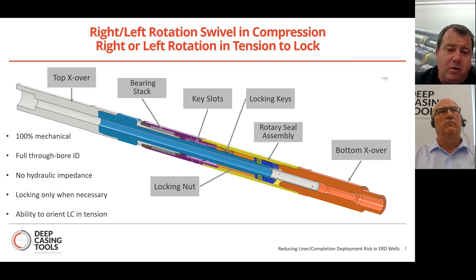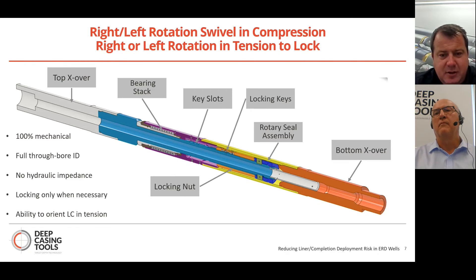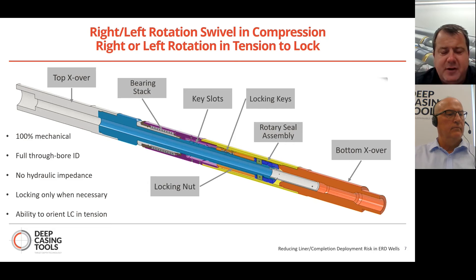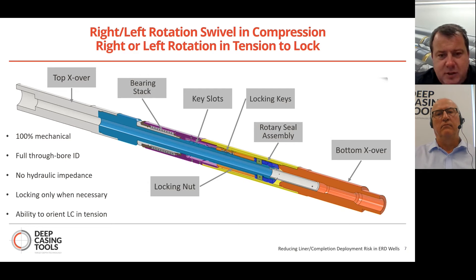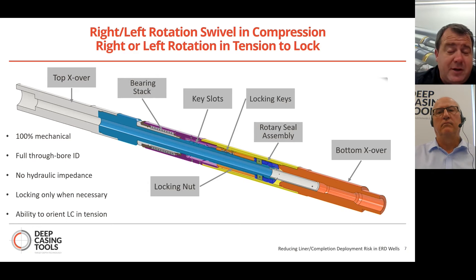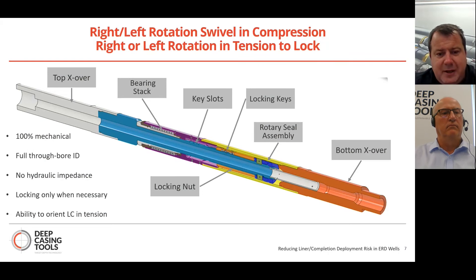When stroking to lock, the locking keys engage with the locking nuts and the tool locks permanently. With our left and right hand locking tool, you pick up into tension and do 20 turns to the left — the tool is fully locked out. One major advantage over competitor technology: if you pick up and rotate in tension opposite to the locking direction, you can rotate the entire string to orientate the lower completion to a gauge or step over a ledge. You then return to compression and you're back into swivel mode.